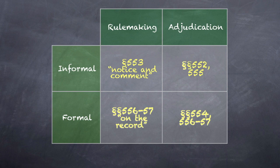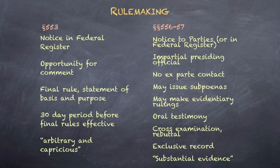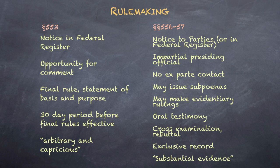Let's recall the different elements of these two types of procedure. Under Section 553, there must be notice in the Federal Register of proposed rulemaking, there must be an opportunity for public comment, a final rule must include a statement of its basis and purpose, there must be a 30-day period before final rules become effective, and judicial review is conducted under the arbitrary and capricious standard.